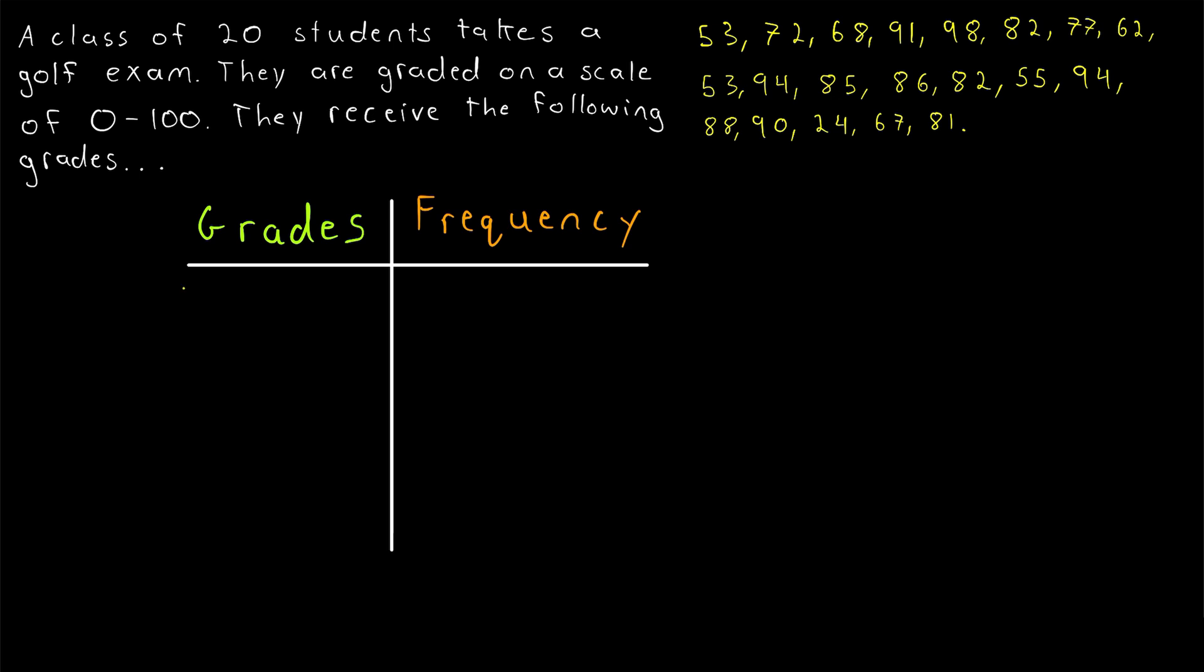So what I mean by that is the first interval will be all of the F's. These are the scores ranging from 0 to 59. And then the next interval contains all of the D's. These are the scores from 60 to 69. The next interval contains all of the C's. These are the scores from 70 to 79. The next interval contains all of the B's. These are the scores from 80 to 89. And then of course the A's, the scores from 90 to 100.